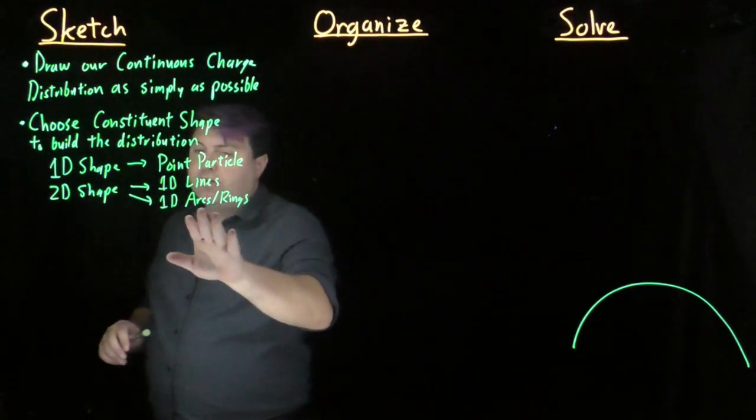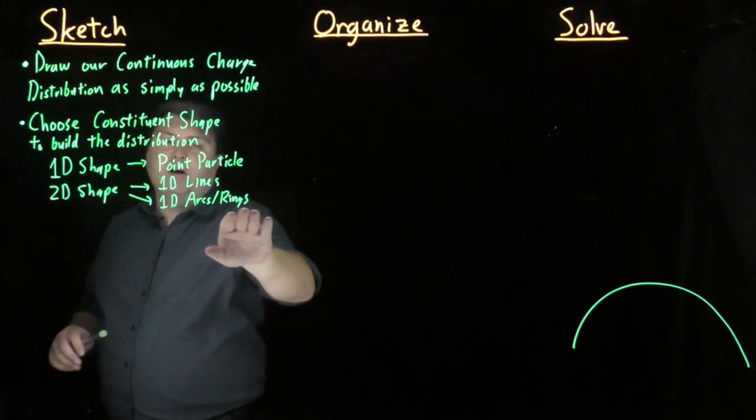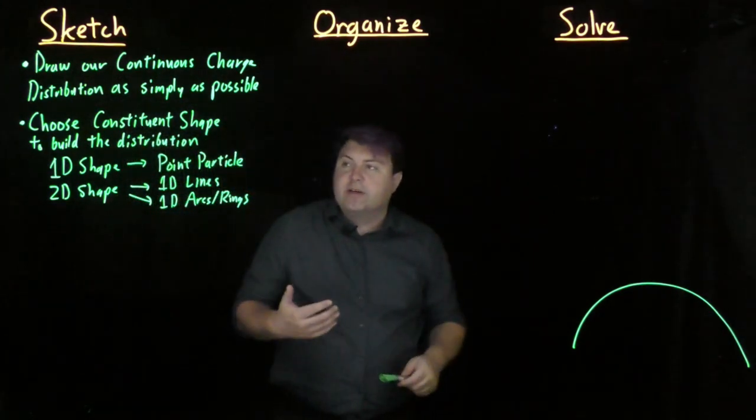If we have a circle, its shape is circular, and so we want arcs and rings that also have circular symmetry. If we have a rectangle, then we want rectangular lines, things like that.